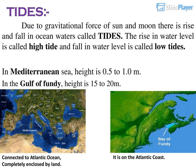Tides: Due to gravitational force of the sun and moon, there is a rise and fall in ocean waters called tides. The rise in water level is called high tide and fall in water level is called low tide. In the Mediterranean Sea, the tidal height is 0.5 to 1.0 metres. In the Gulf of Fundy, the height is 15 to 20 metres.